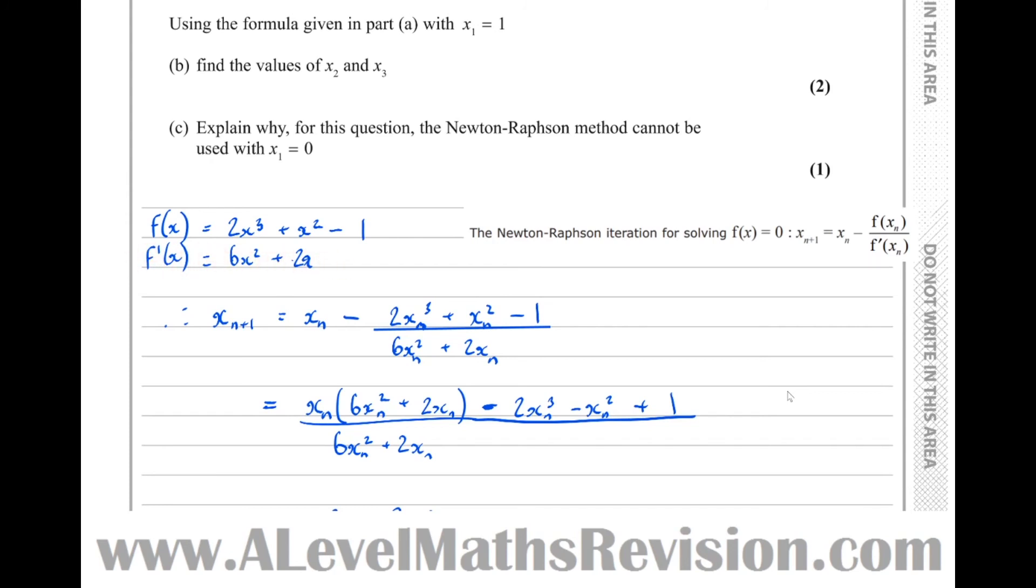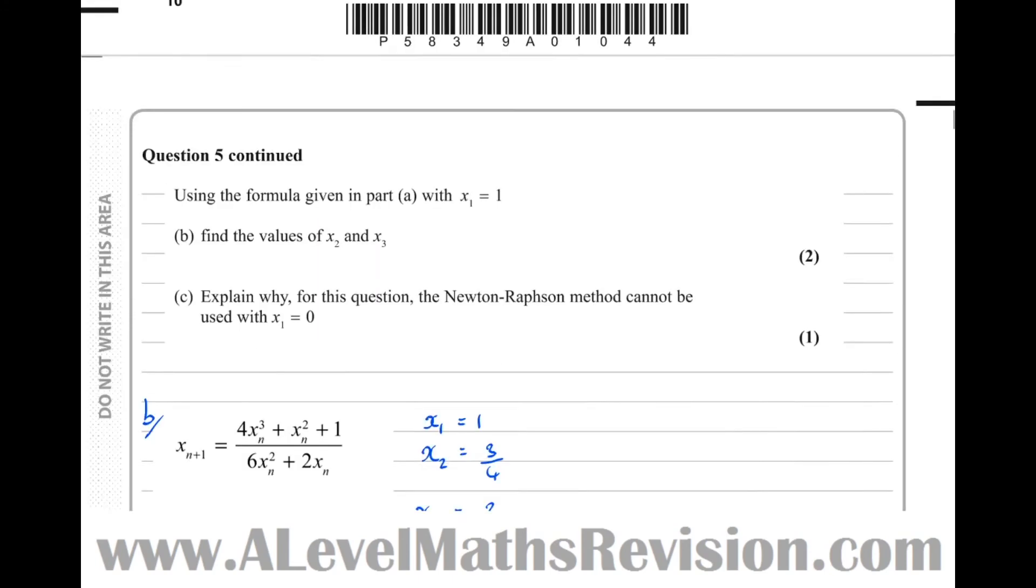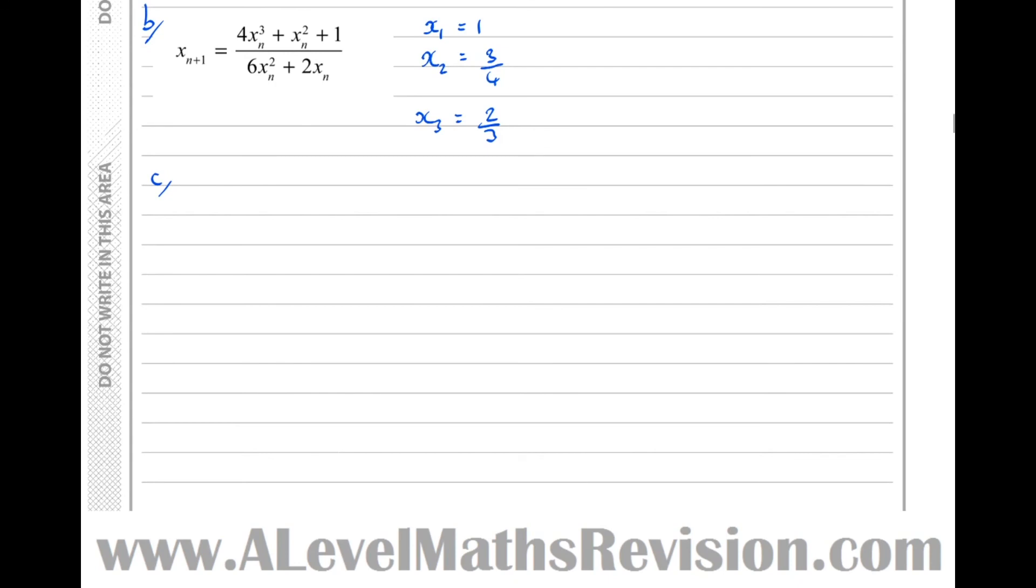Meaning that at x1 equals 0, we have a stationary point. So x1 equals 0 implies f dash of x1 equals 0, therefore stationary point.